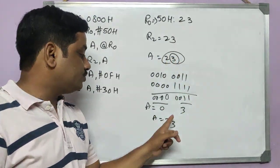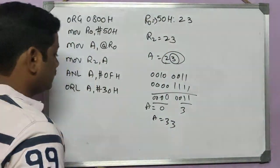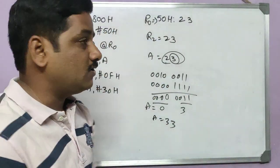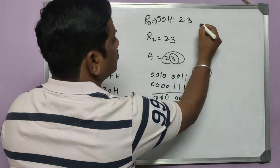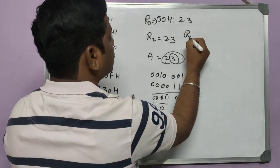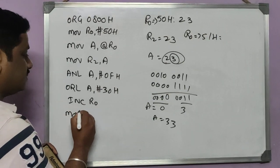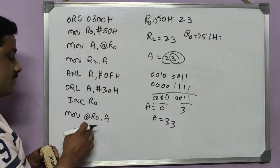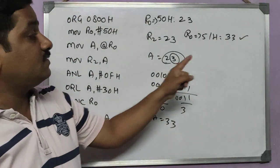The result 33H needs to be stored. The input is at 50H, so I will store the result at 51H. I increment R0 using INC R0 — R0 now points to 51H. Then I store the accumulator result using MOV @R0, A. So at memory location 51H we now have 33H, the ASCII conversion of the lower BCD digit 3.